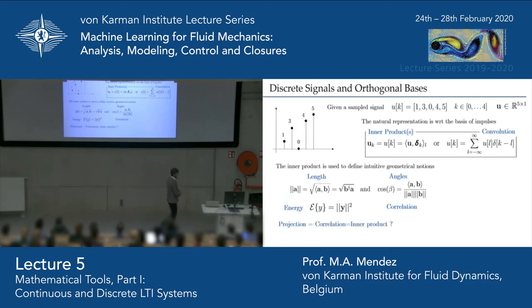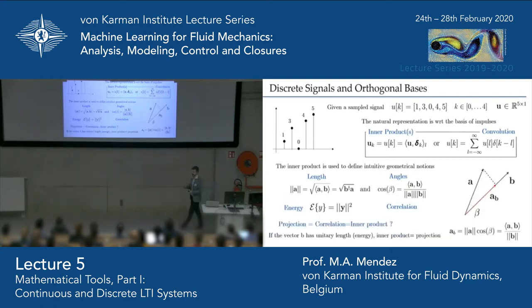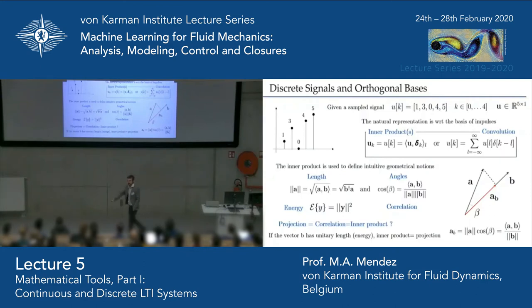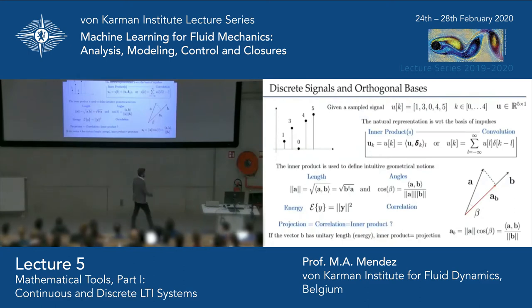Using the same tools we touch on the notion of projection. From basic algebra, projecting a vector onto another vector involves taking the inner product and dividing by the length of the vector onto which you project. If that vector has unit length, the inner product is already the projection and the correlation between the two. Requiring unit length is exactly what happens in model analysis, and we will see it today.